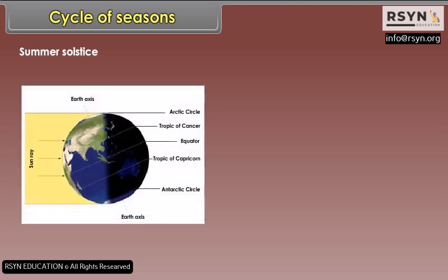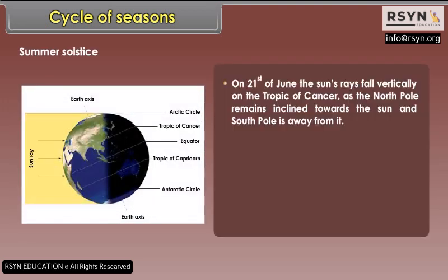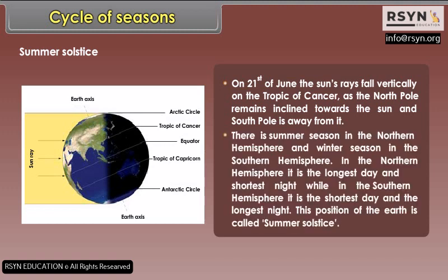Summer Solstice. On 21st June, the sun's rays fall vertically on the Tropic of Cancer as the North Pole remains inclined towards the sun and the South Pole is away from it. There is summer season in the Northern Hemisphere and winter season in the Southern Hemisphere. In the Northern Hemisphere, it is the longest day and shortest night, while in the Southern Hemisphere, it is the shortest day and the longest night. This position of the earth is called summer solstice.